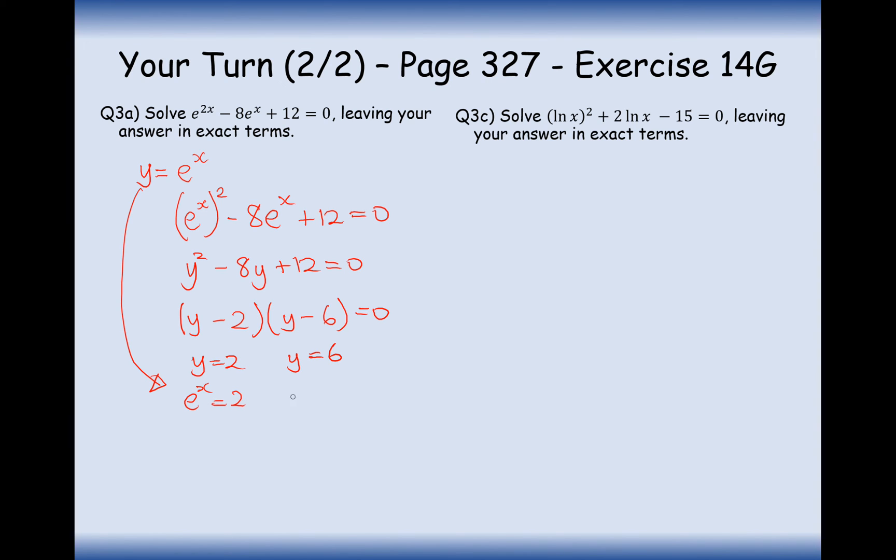Now we can't stop there because we have to now bring back in the fact that y is e to the x. So e to the x equals 2 or e to the x equals 6. So therefore, working out what x is, what's the opposite operation of e? That's ln. And what's the inverse operation of e? That's ln on this side as well. So we get two answers here, ln of 2 and ln of 6.